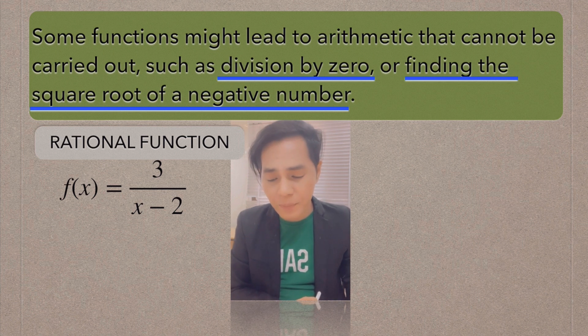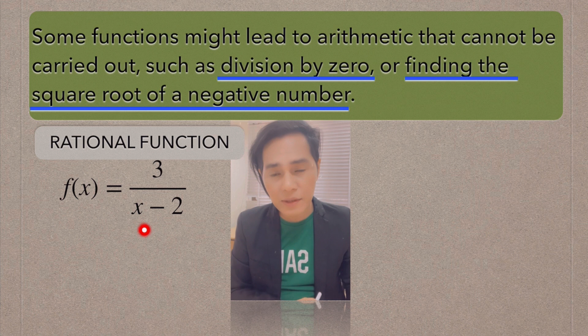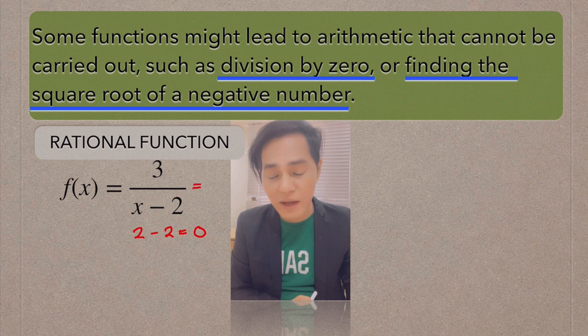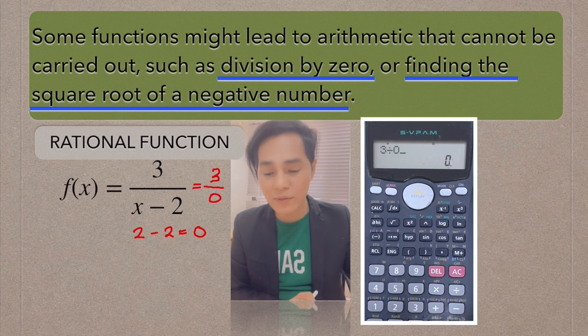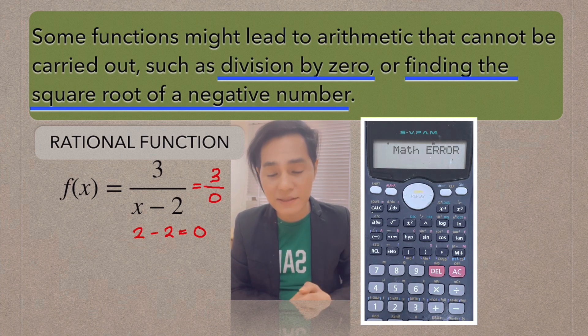what do you think is the value of x that makes the given denominator become 0? So in that case, if we are going to divide 3 by 0, that's not possible. I'm going to show here in the calculator. So that's it. It becomes undefined.